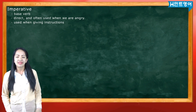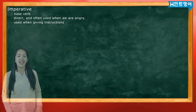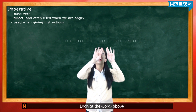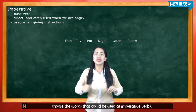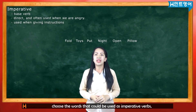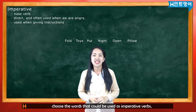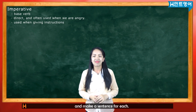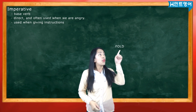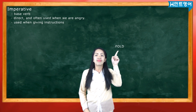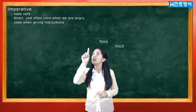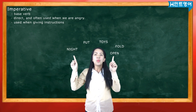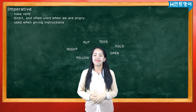Look at the words above. Choose the words that could be used as imperative verbs and make a sentence for each. We have here: fold, twice, put, night, open, and pillow.